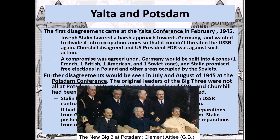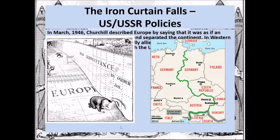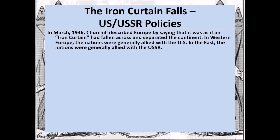The war ended in August 1945 and at that point we say the Iron Curtain falls. In March 1946, Churchill described Europe by saying it was as if an iron curtain had fallen across and separated the continent. In western Europe, nations were generally allied with the U.S.; in eastern Europe, nations were generally allied with the USSR — creating a clear division.